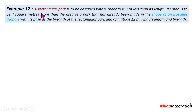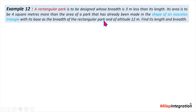Example 12. A rectangular park is to be designed whose breadth is 3 meters less than its length. Its area is to be 4 square meters more than the area of the park that has already been made in the shape of an isosceles triangle, with its base as the breadth of the rectangular park and of altitude 12 meters. Find its length and breadth.